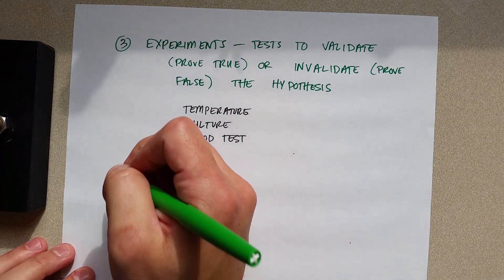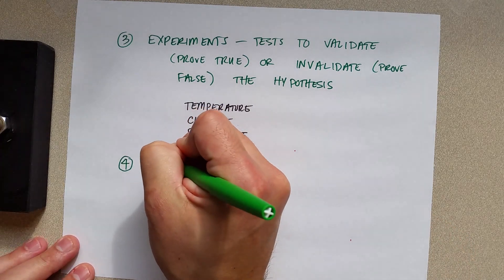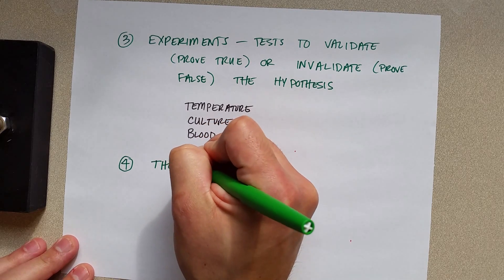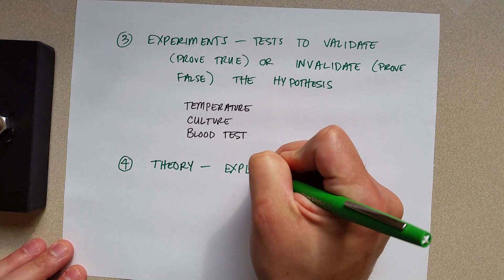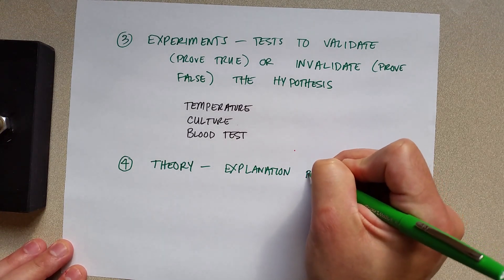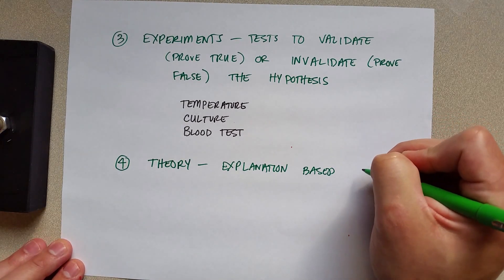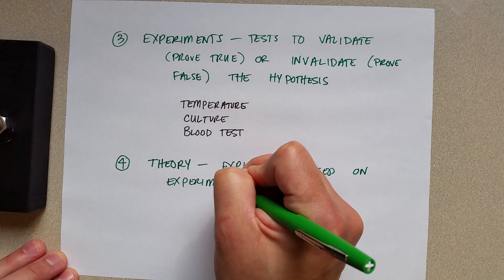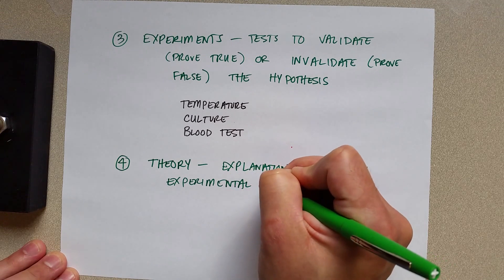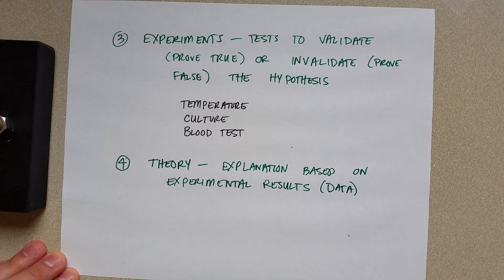At some point in time, those experiments will lead her to a conclusion. In which case, now she will have a theory. A theory is an explanation based on experimental results or data. And the more data, or the more experimental results you have, the more likely or more confident you are in your theory.